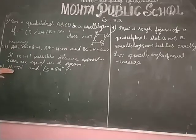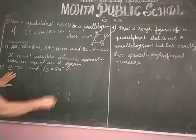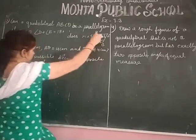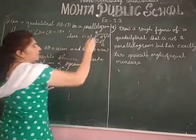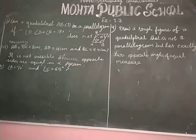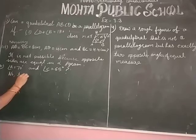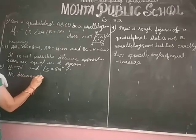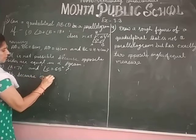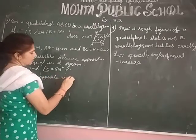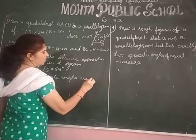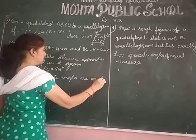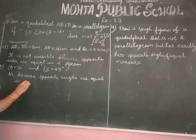For the last part: angle A is equal to 70 degrees and angle C is equal to 65 degrees. Is it possible? No, because opposite angles are equal in a parallelogram, so this is not possible.